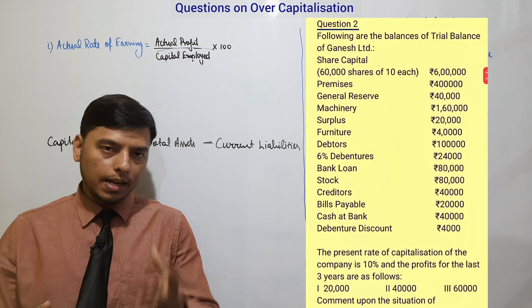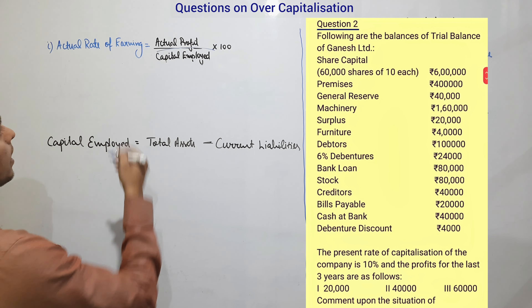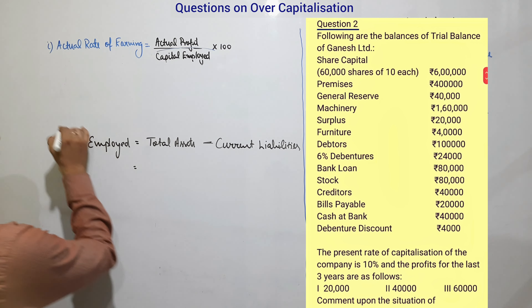A trial balance is given. On one side we have credit balances: share capital, general reserve, surplus, debentures, bank loan, creditors, and bills payable. On the other side, debit balances show current and non-current assets. Using this, we need to determine whether the company is in an over-capitalized situation. The present rate of capitalization — current rate — is given as ten percent.